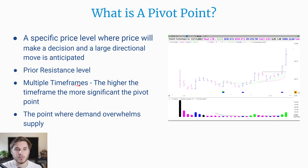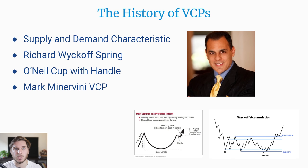A pivot is often a prior resistance level, such as a week high, a month high, even a yearly high. You can use multiple timeframes to find different pivots, and the higher the timeframe, the more significant the pivot point. Here we've got a pivot point right at this prior day's high, but also at this weekly high and the all-time high. It's basically the point where demand overwhelms supply, and this is essential to define the proper buy point coming out of a volatility contraction pattern.